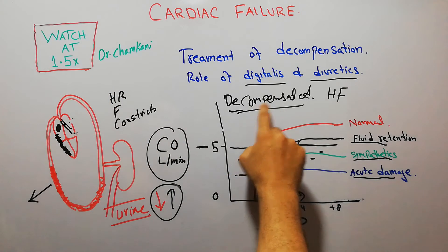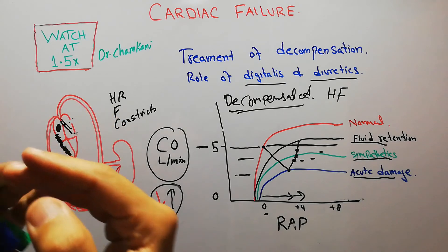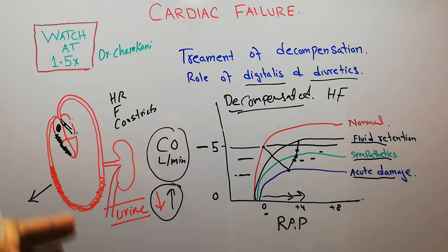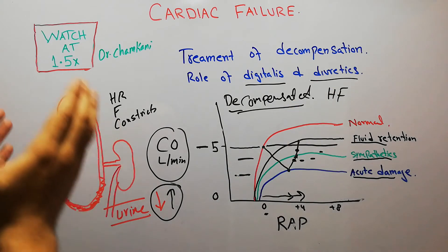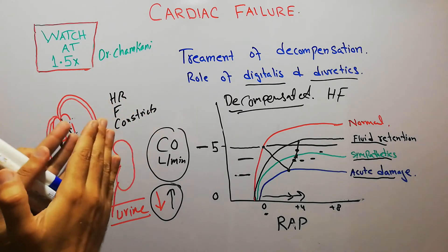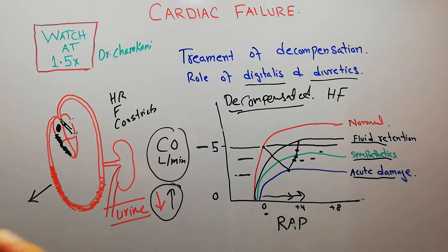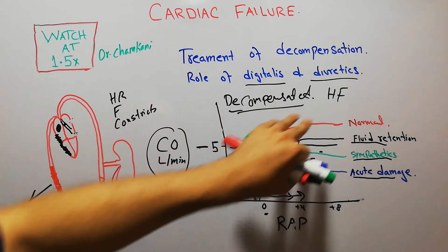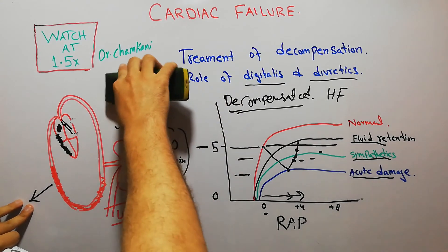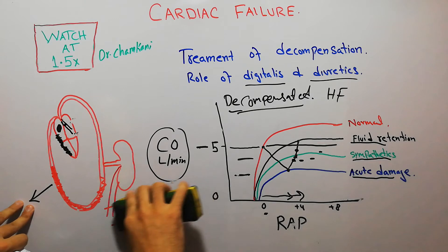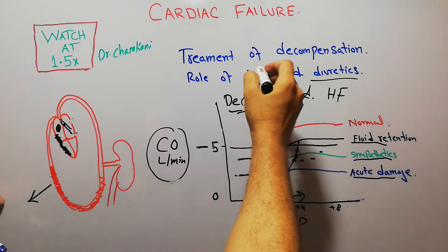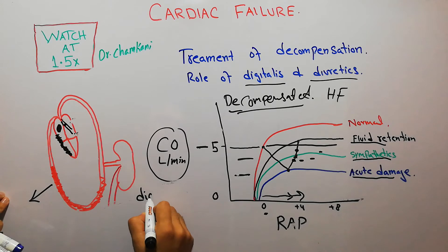In compensated heart failure, the damage to the heart is small, so compensations allow recovery. But in decompensated heart failure, the damage is so extensive that the heart cannot pump at normal rate or force, leading to accumulation and retention of a lot of fluid. In these circumstances, we give treatments — one being a cardiotonic drug known as digitalis.